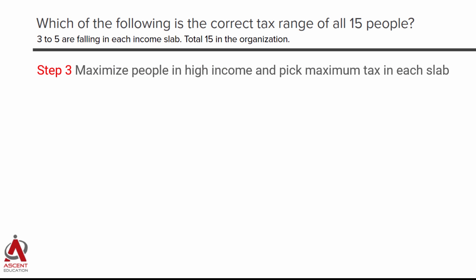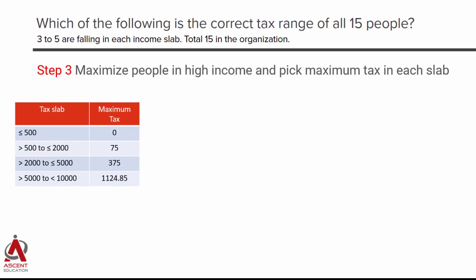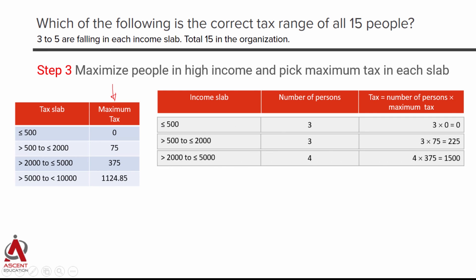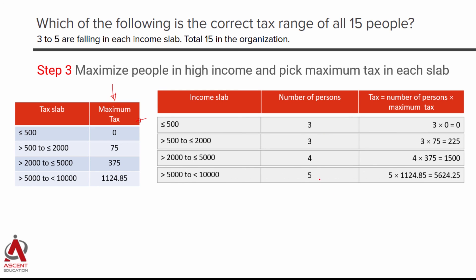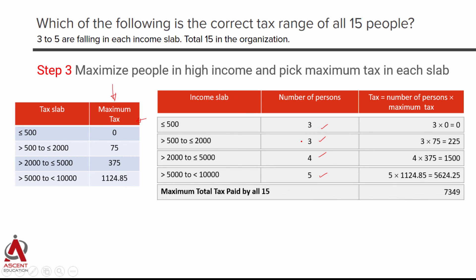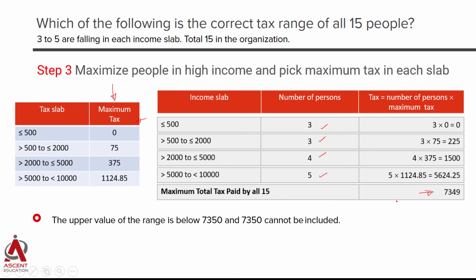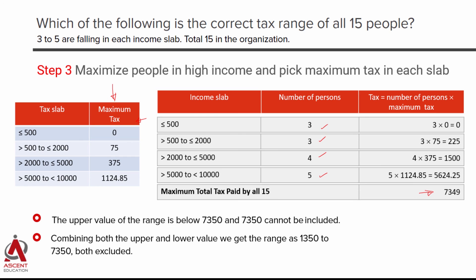Now compute the high end: maximize people in the highest income bracket — 5 in the top slab, 4 in the next, and 3 in each of the two lower slabs. Picking the maximum tax for each bracket gives a total of 7349 rupees, which is just under 7350. So the range of tax for all 15 people is greater than 1350 and less than 7350, not including either endpoint.